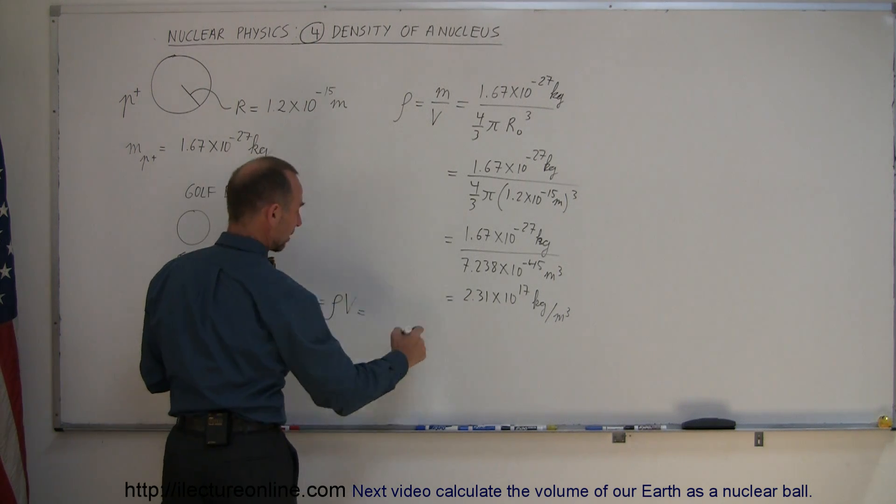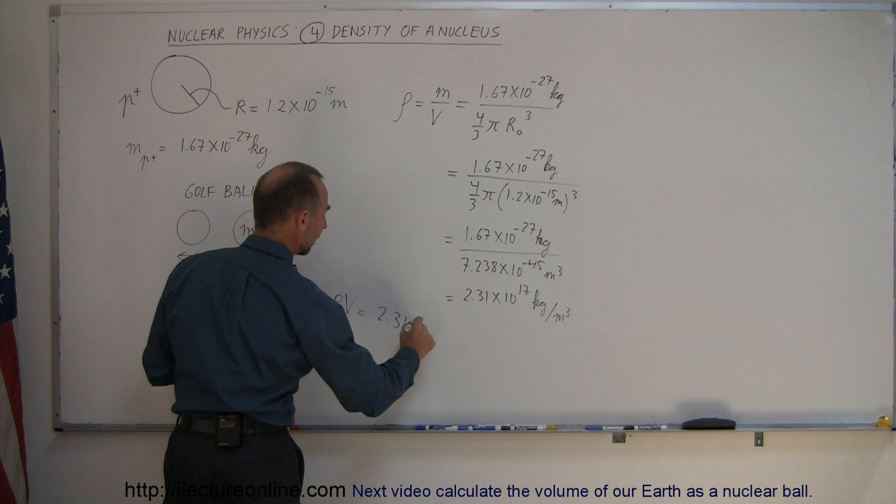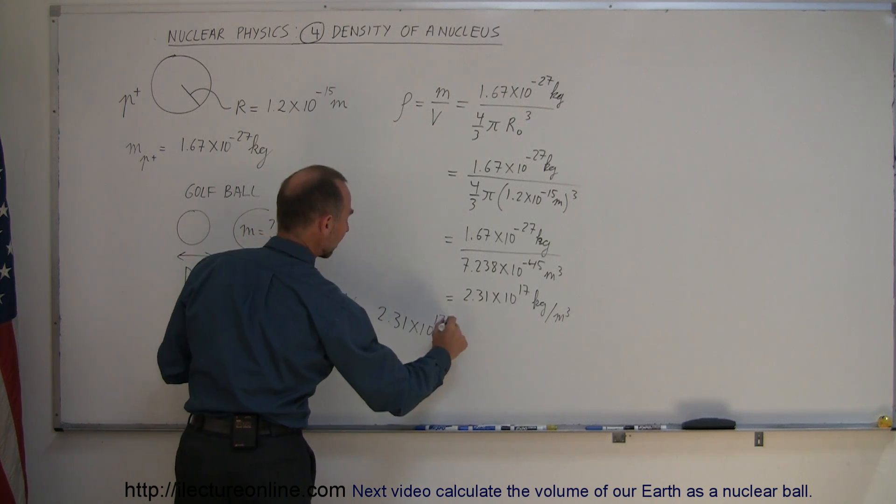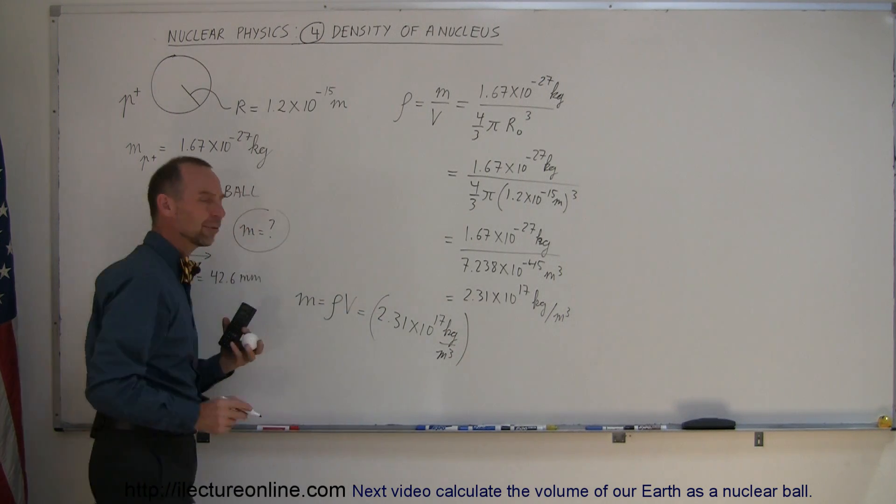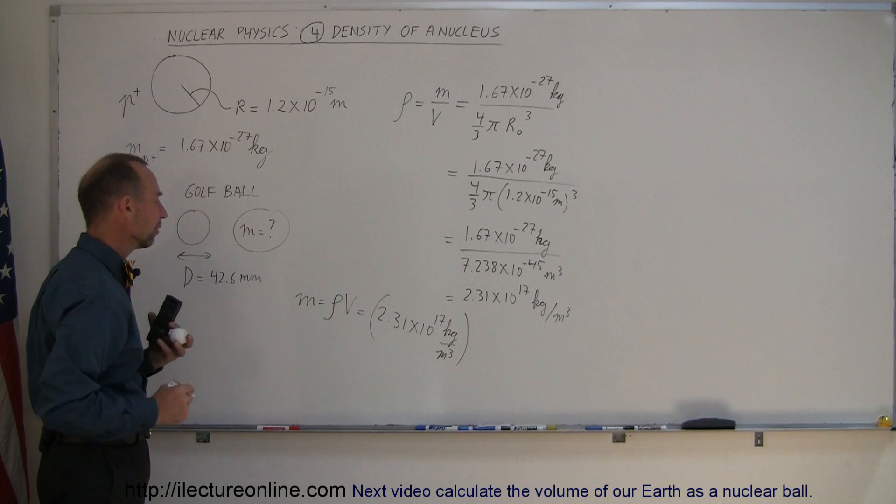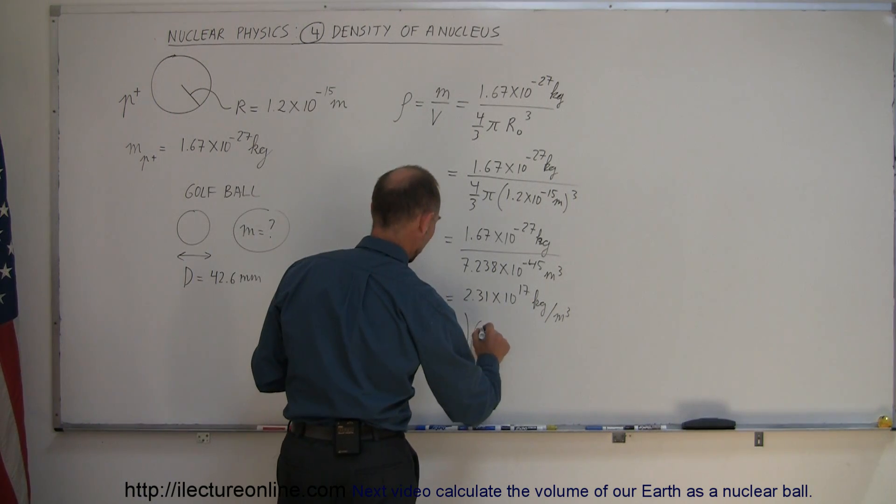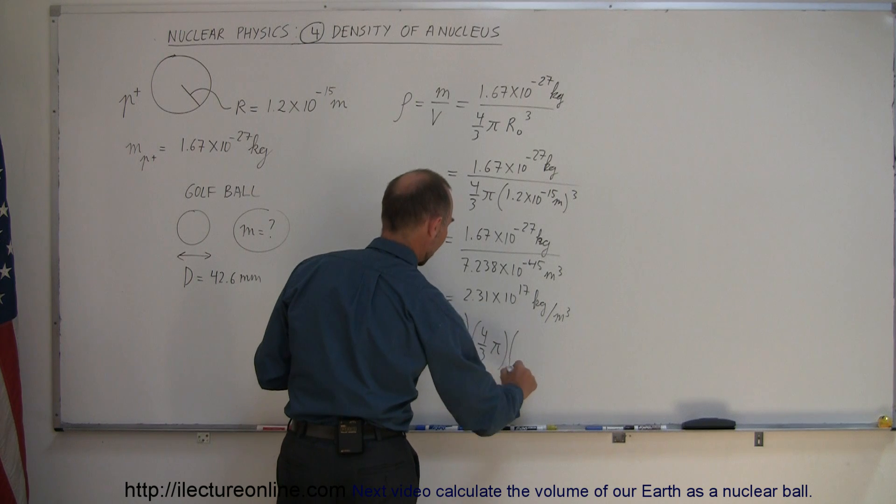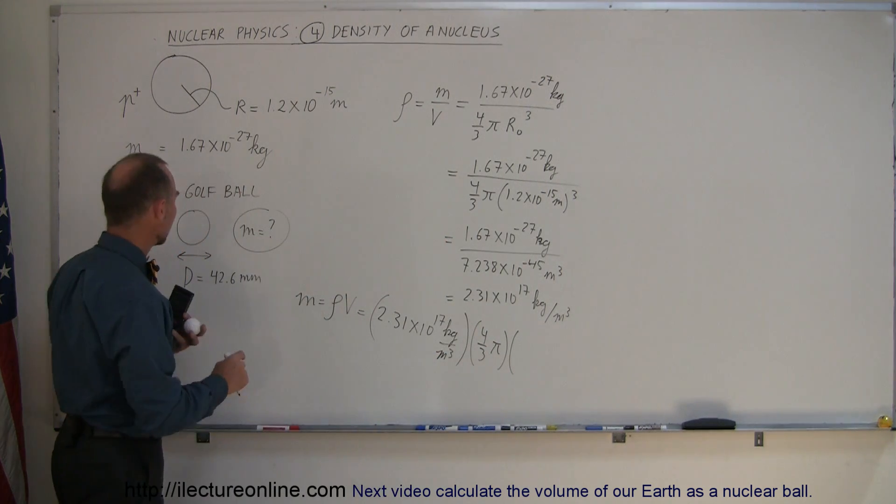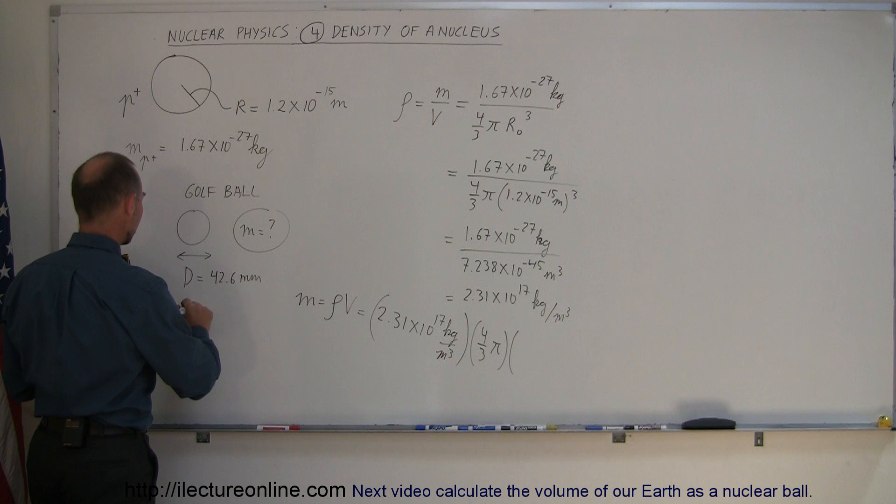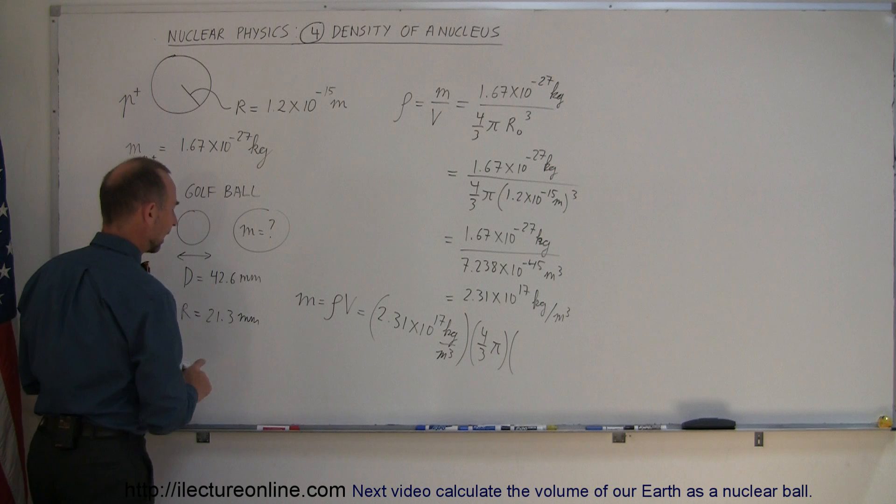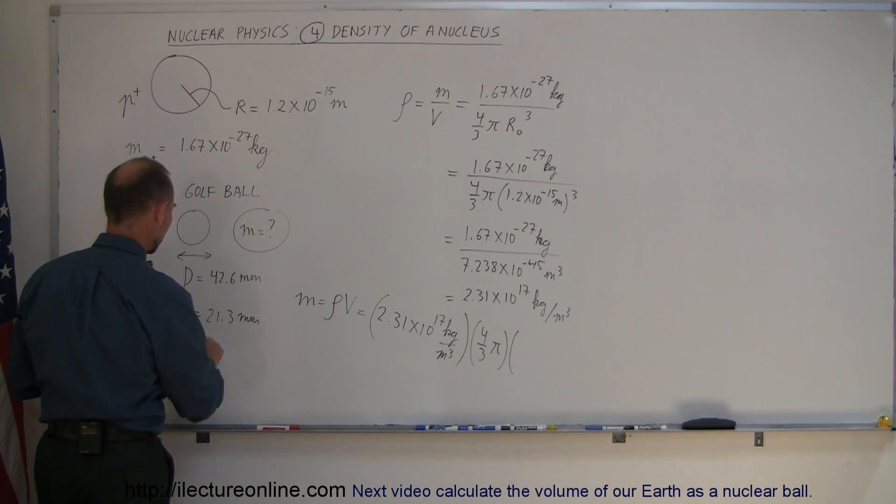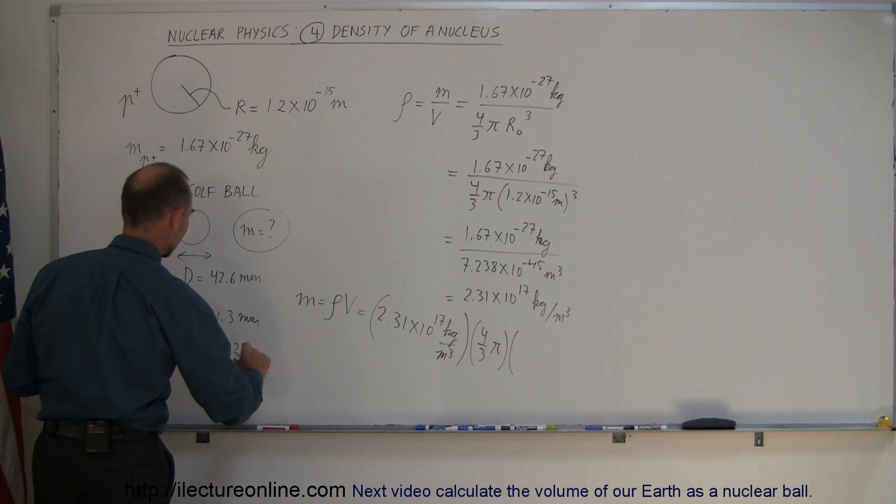The density is right here, 2.31 times 10 to the 17 kilograms per cubic meter. I have to multiply times the volume of this golf ball. The volume would be 4 thirds pi times the radius cubed. If the diameter is 42.6 millimeters, then the radius would be half of that, which is 21.3 millimeters. Converting that to meters, this is about 2.13 centimeters, so the radius equals 0.0213 meters.